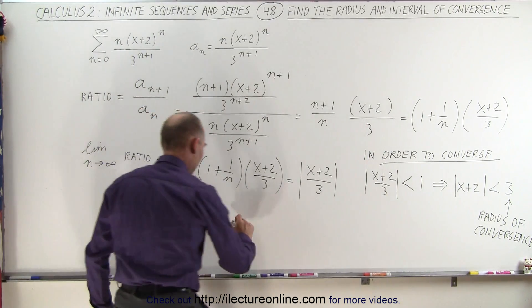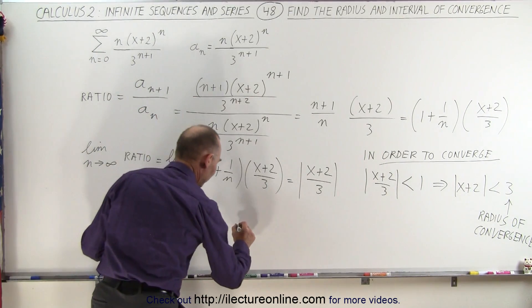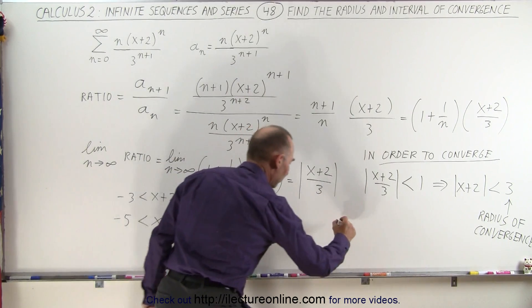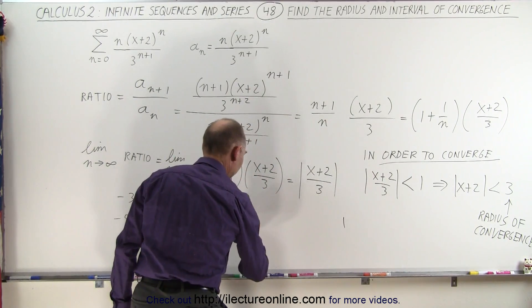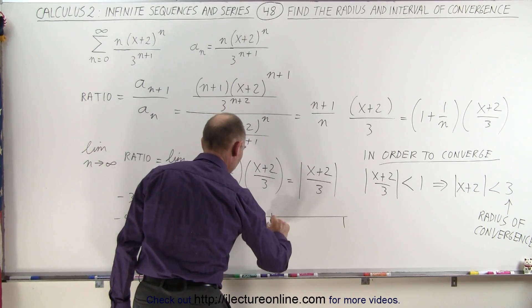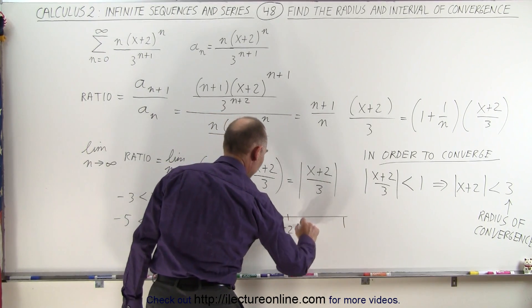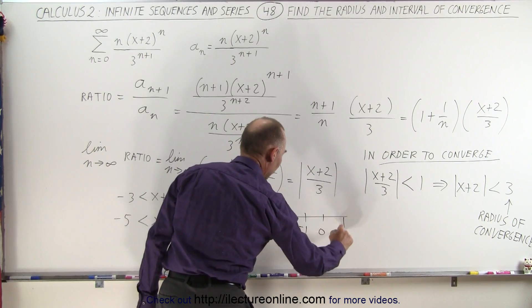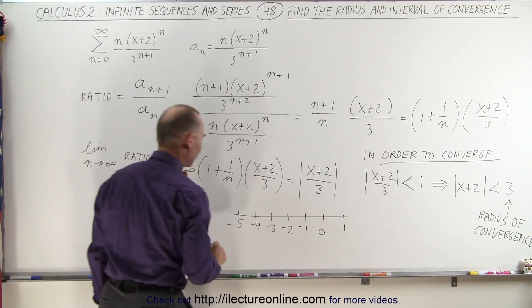Let me graph it out. So we have the left value of -5, the positive value of 1. Let's say we're on the number line. This is -5, -4, -3, -2, -1, 0, and positive 1.